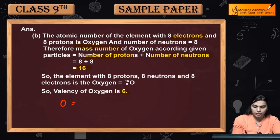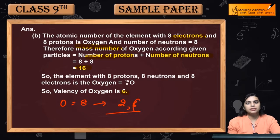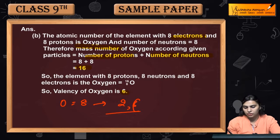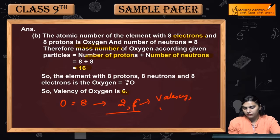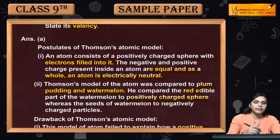Oxygen's atomic number is 8. Its electronic configuration is 2 and 6. The number of electrons in the outermost shell are our valence electrons, so the valency of oxygen is 6. This can also be called the valence electrons. Is it clear?